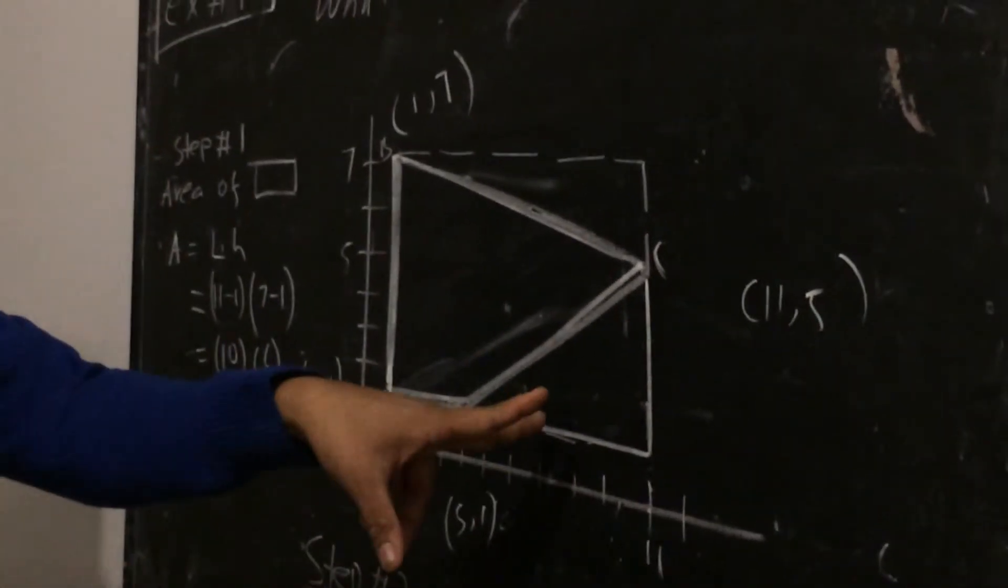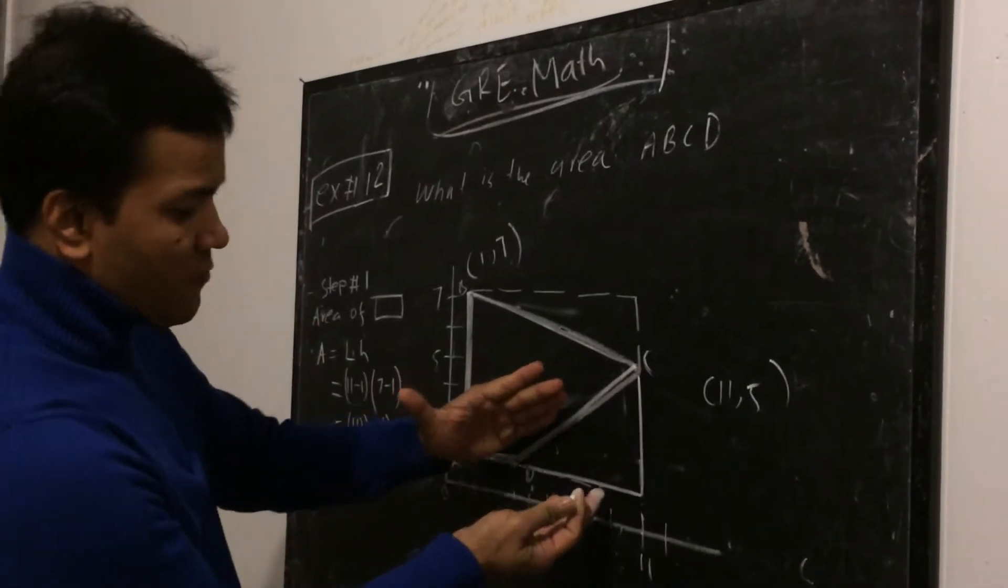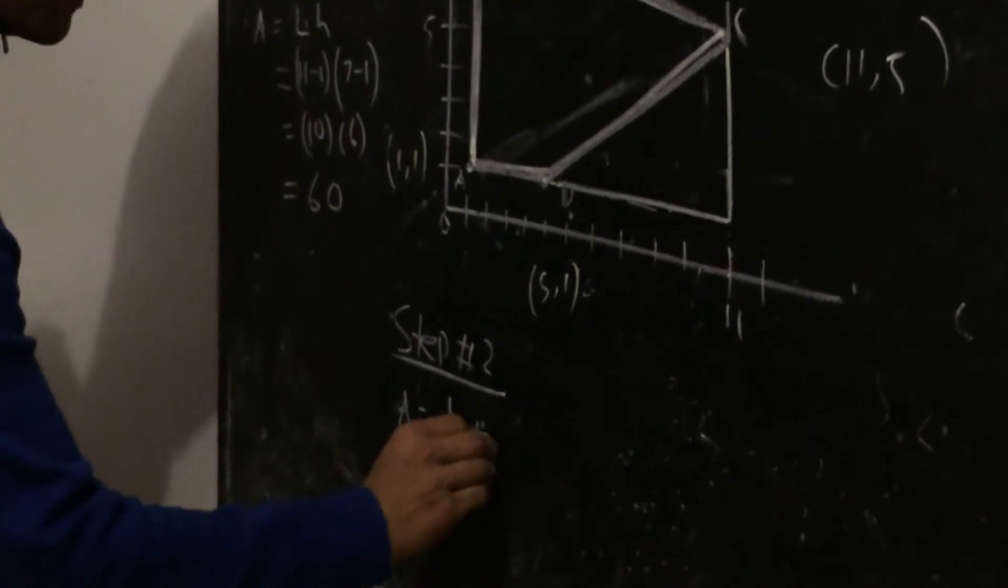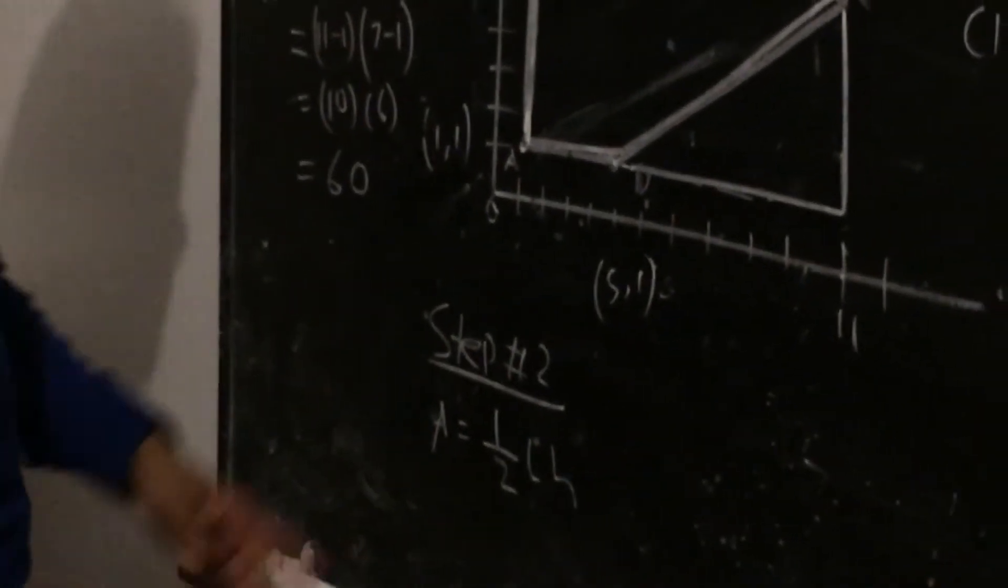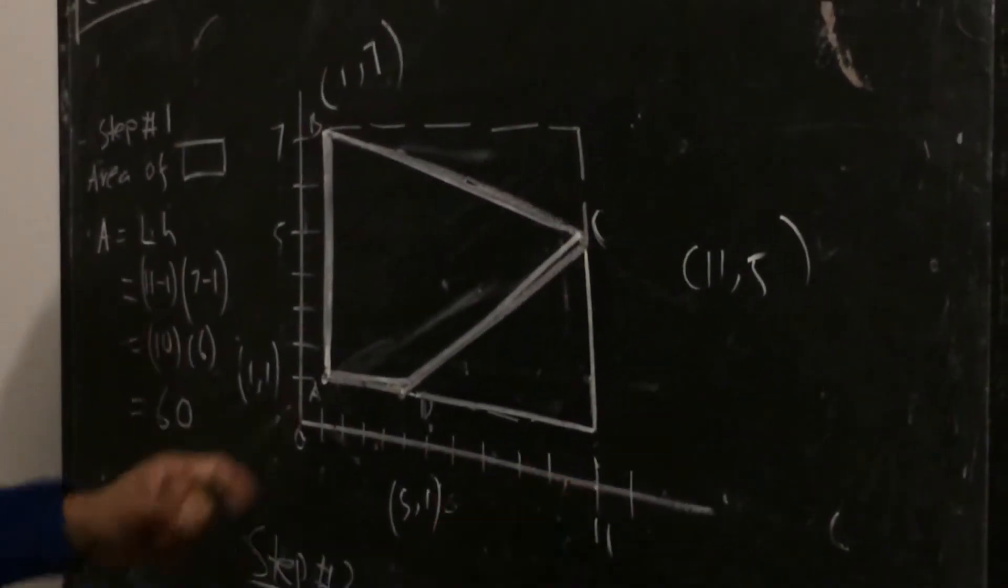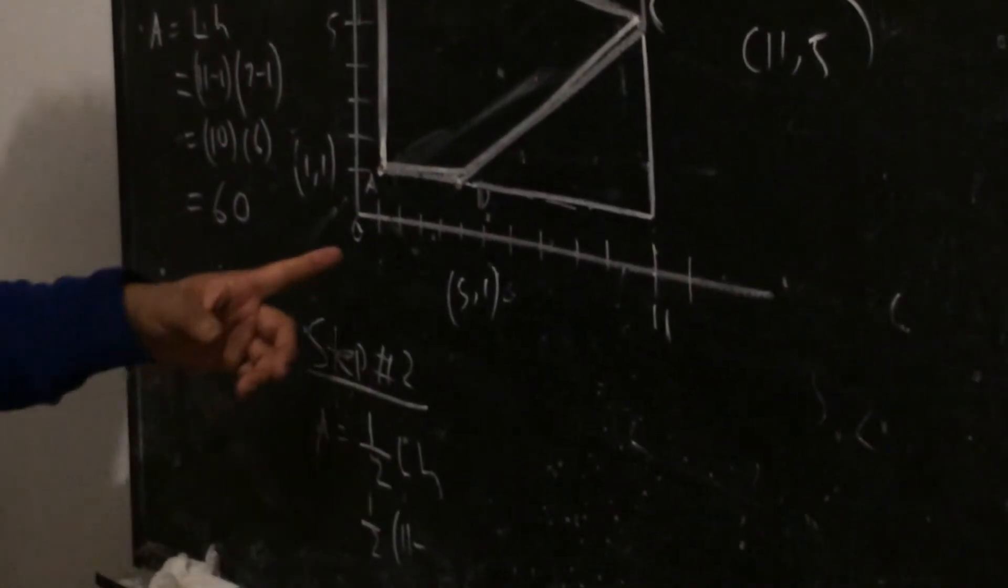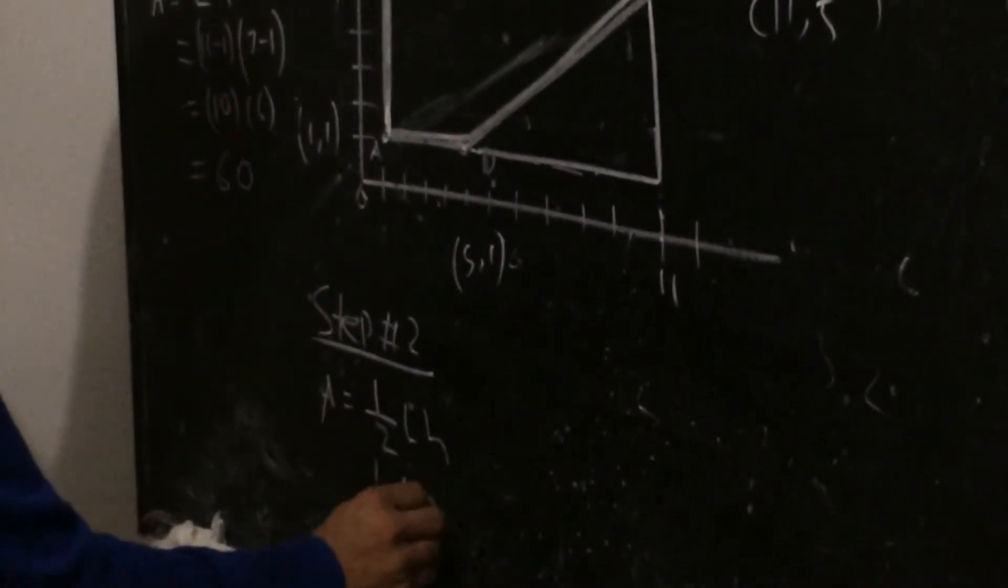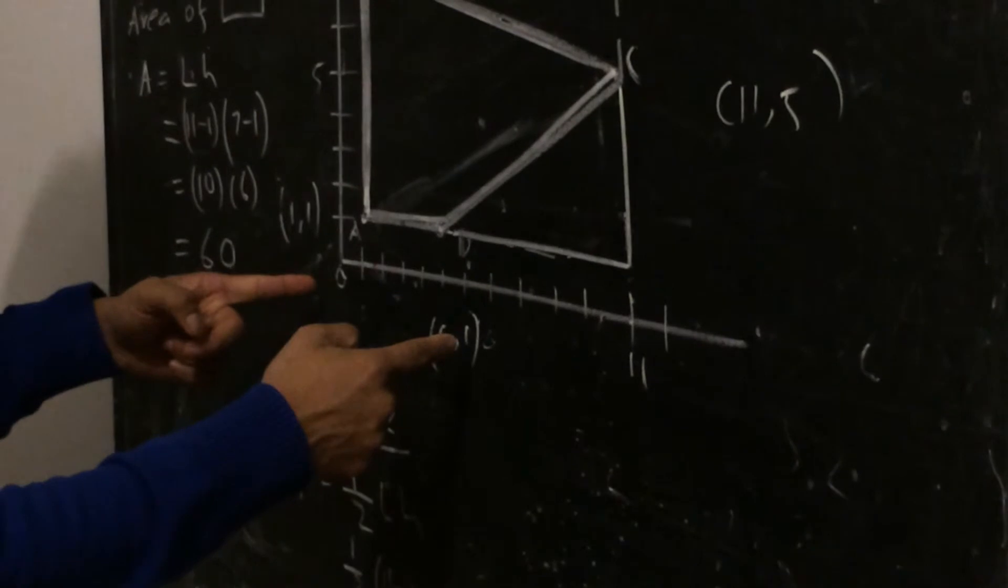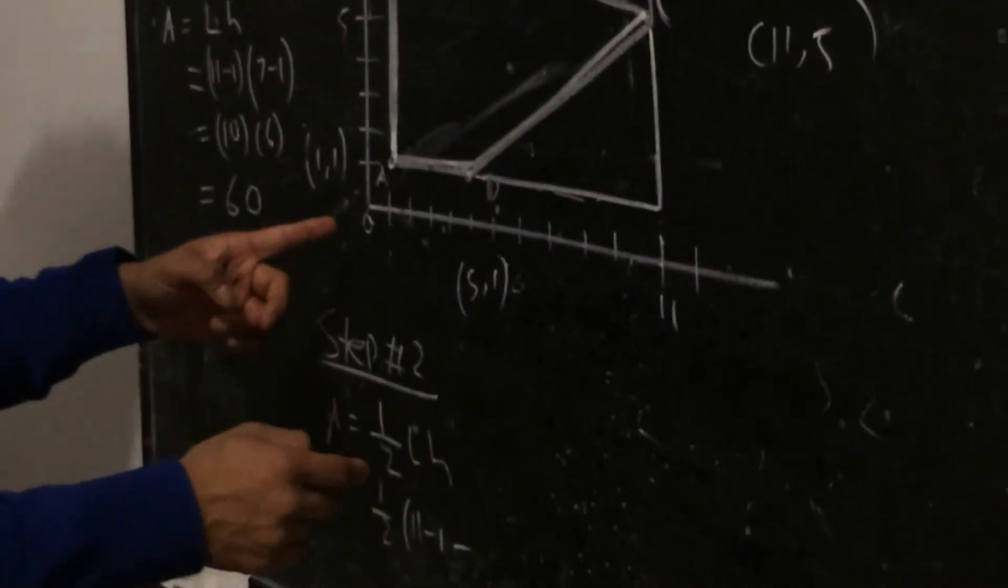So this piece is, this is exactly a triangle. So area of the triangle is half length times height. So what is the length? Length is from 0 to 11, right? So half, 11 minus 1, minus, this is 1, or just 5, 11 minus 5. 11 minus 5 is fine.